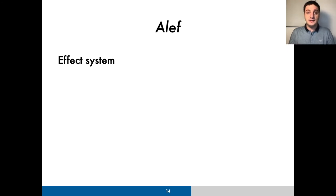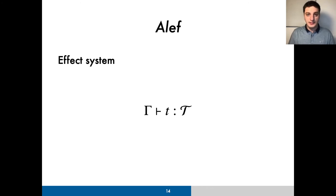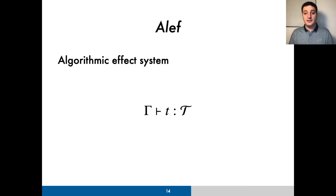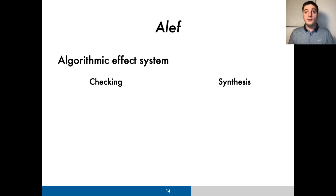Let's now take a look at how Aleph's type system is defined. As a baseline, we defined a declarative effect system for Aleph, which basically adapts FC's effect system to incorporate effect rows. This is defined in terms of a standard typing judgment, in which we write uppercase T to stand both for computation and value types. This effect system is not only a useful semantic foundation, but it's also the conceptual guide for the design of Aleph's algorithmic effect system. Our goal was to formulate a simple algorithmic effect system for Aleph, making use of the bidirectional typing discipline. Accordingly, we split the typing judgment into two: one for checking and one for synthesis. Both typing judgments provide an additional output of the explicit instantiations for the type's effect rows, allowing Aleph to synthesize effect information.